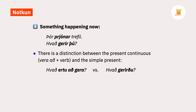Hvað ertu að gera? means 'What are you doing right now?', whereas Hvað geru? means 'What do you do for work? What do you do in general in your life?' This distinction isn't always as clear-cut as the example here, and it does depend on the context.